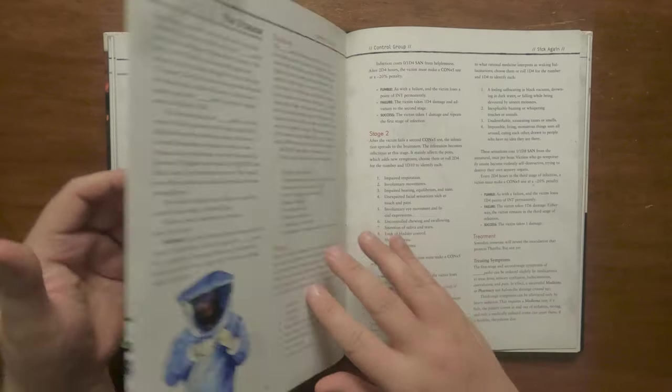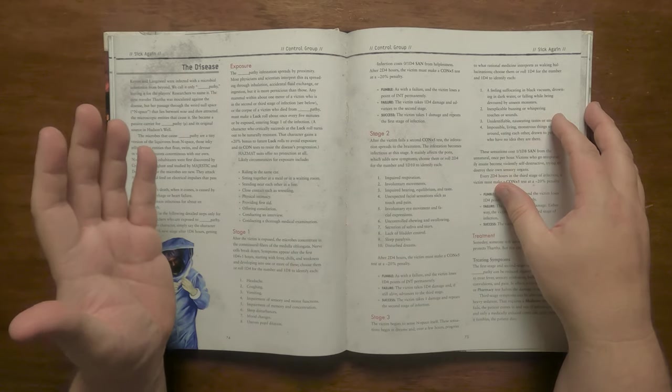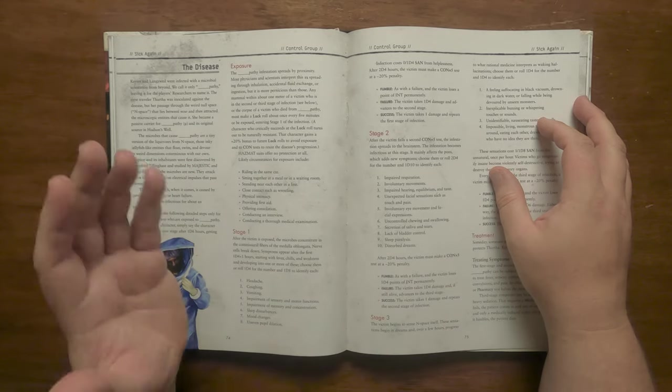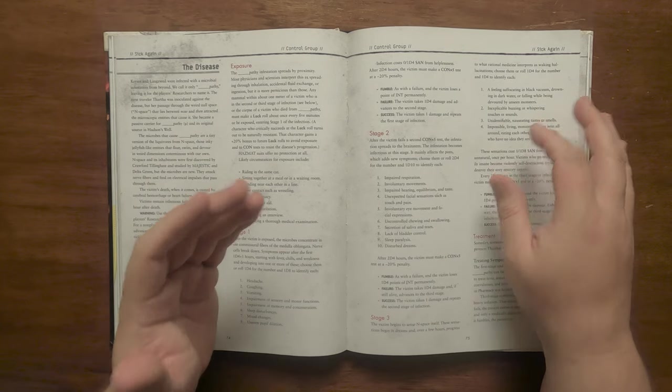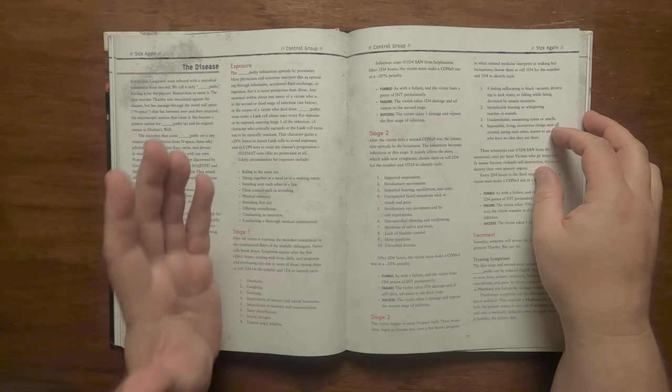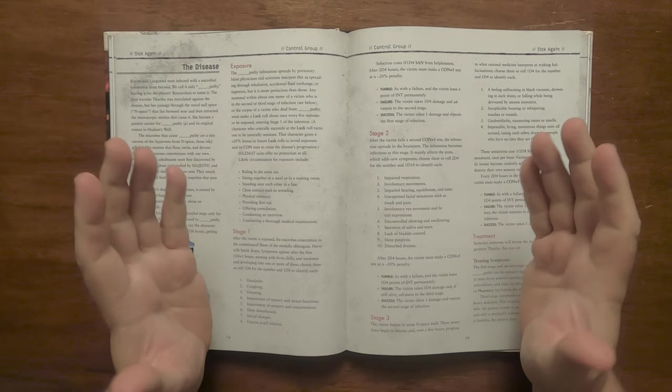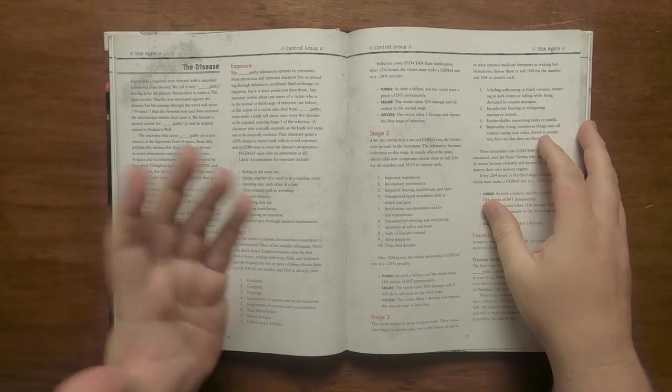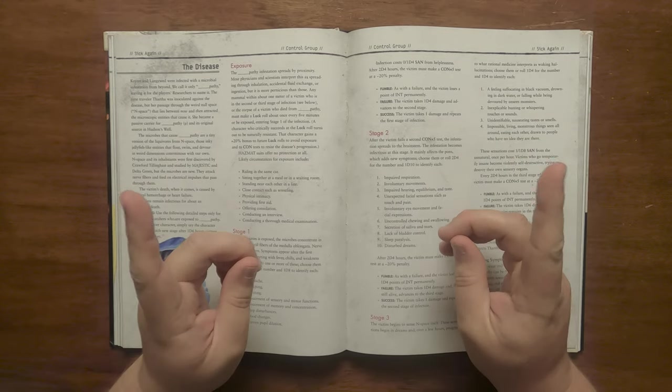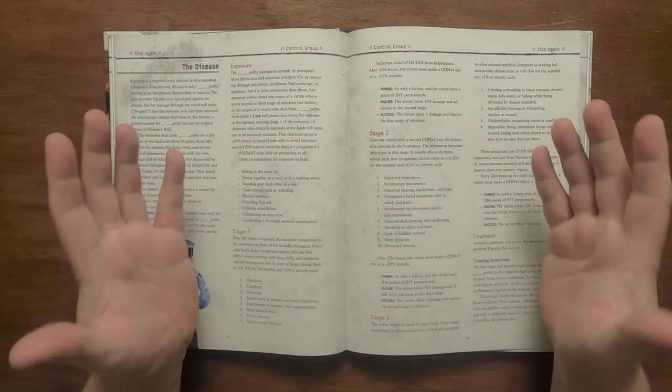It then details the different stages of blank pathy. At stage 1 of exposure, nerve cells start to fail and a D4 and a D8 are rolled, the first to get the number of symptoms and the second to roll the symptom, things like headaches, coughing, sensory impairment and uneven pupil dilation. It causes a D4 sand hit and after 2 D4 hours they make a con times 5 roll to see if they stay on this stage or move to the next. A fumble causes brain damage with a loss of one int. Stage 2 is where it spreads to the brain stem and they become infectious. They get 2 D4 symptoms and roll D10 for each. These can be things such as impaired hearing, taste, respiration or equilibrium, loss of bladder control, sleep paralysis and the like. After a further 2 D4 hours a con times 5 roll is made with the same advancement chances before.